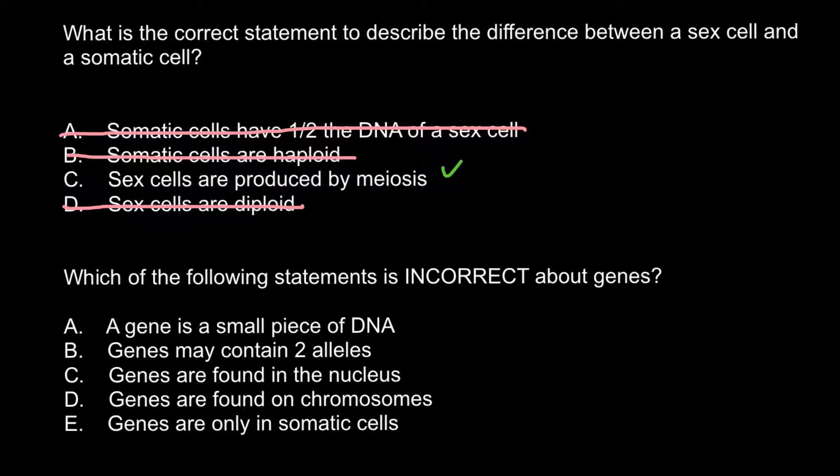So next question: Which of the following statements is incorrect about genes? Answer A: A gene is a small piece of DNA. This is true. Relative to the chromosome on which genes can be found, genes represent just a small fragment — not to mention the whole genome of the cell found in the nucleus.